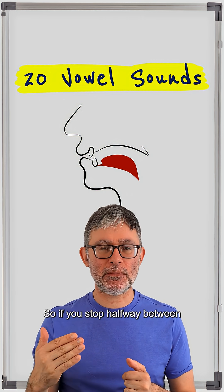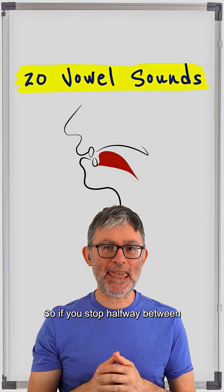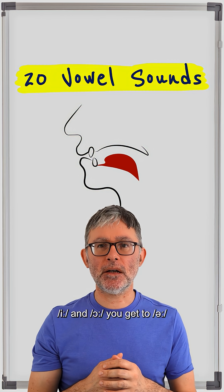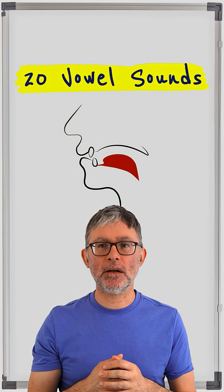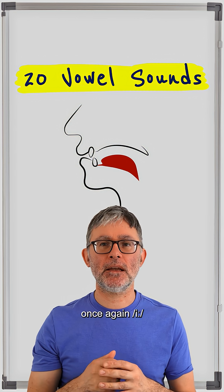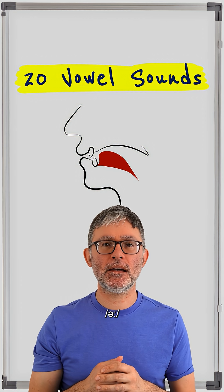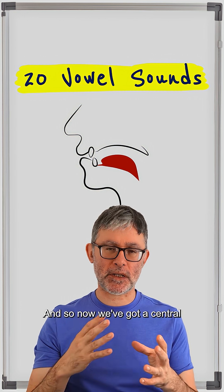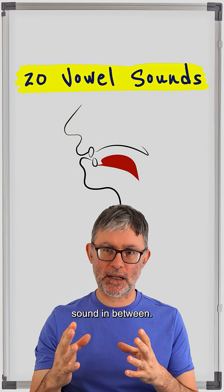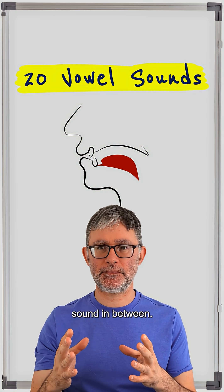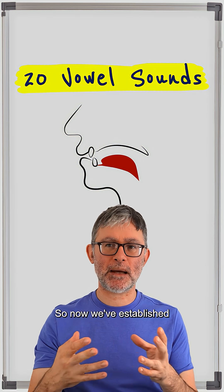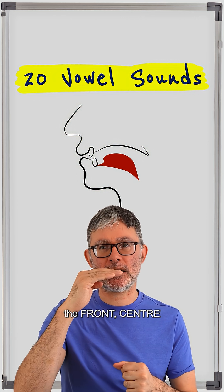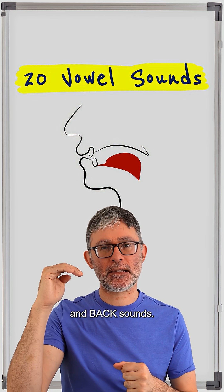So if you stop halfway between 'ee' and 'oar', you get to 'er'. Once again: 'ee', 'er', 'oar'. And so now we've got a central sound in between. We've established the front, centre, and back sounds.